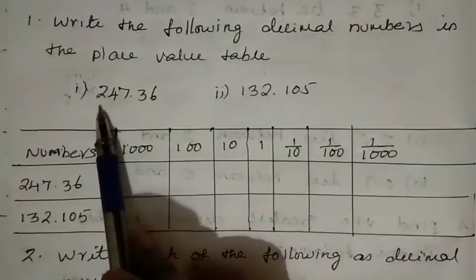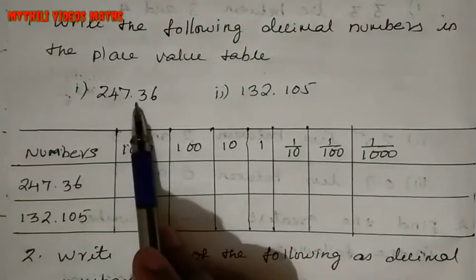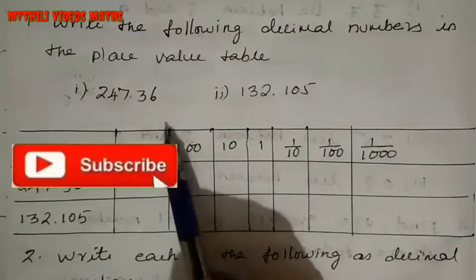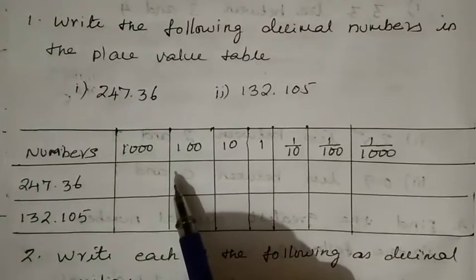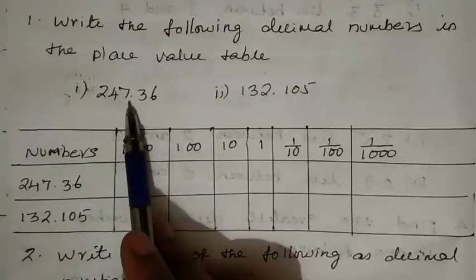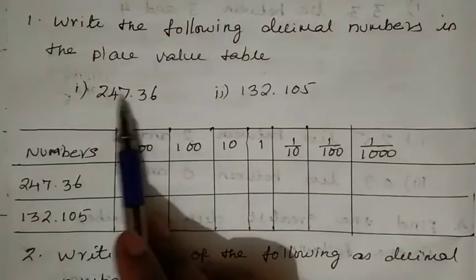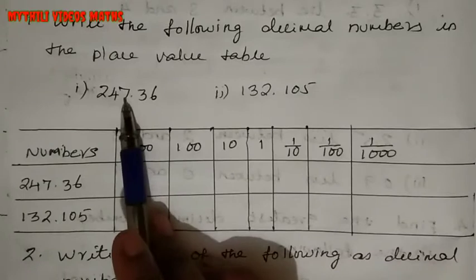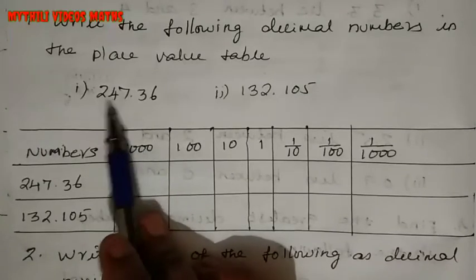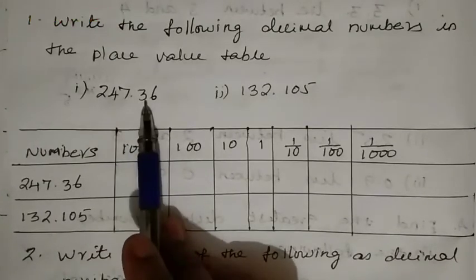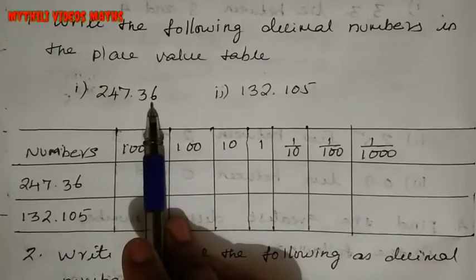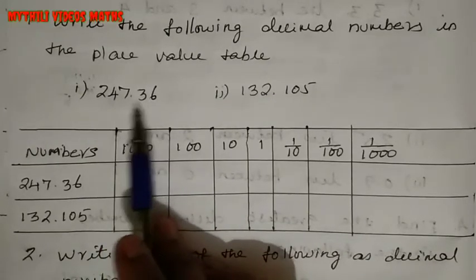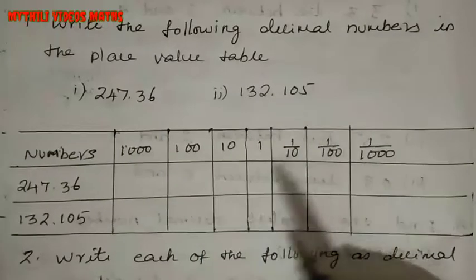So what are we going to write? 247.36 — that's what we need to write. We already know the place value method. There is a decimal point here, so we put the point accordingly in the place value table.